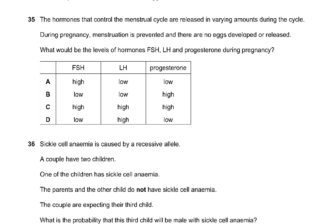Question 35: during pregnancy, menstruation is prevented and no eggs are developed or released. What would be the levels of FSH, LH, and progesterone during pregnancy? FSH and LH would be low because no follicle needs to be stimulated. The answer is B — FSH and LH are low, and progesterone is high because it maintains the uterine lining so the fetus can embed and grow.